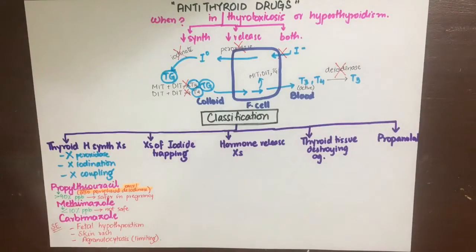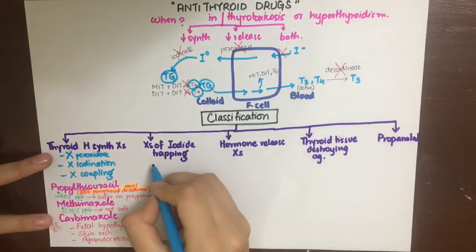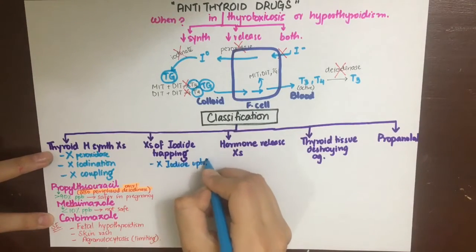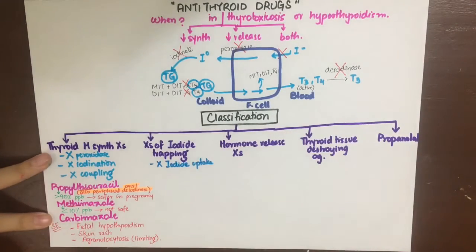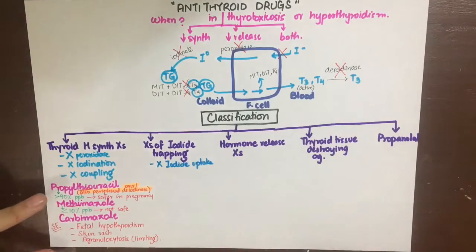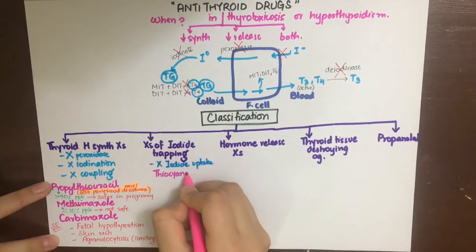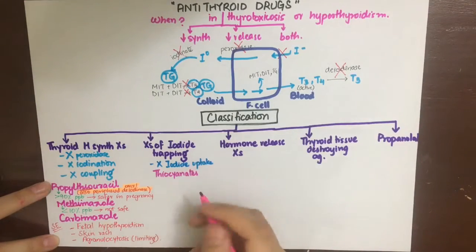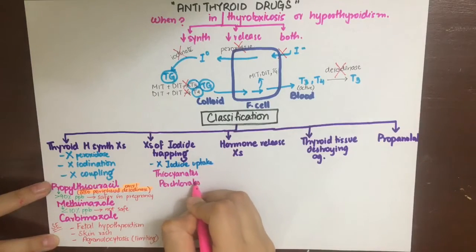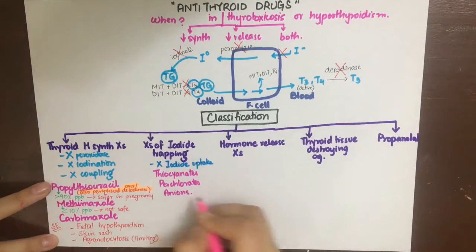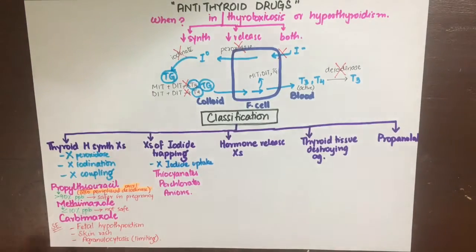The next drugs used are inhibitors of iodide trapping — they inhibit the uptake of iodide. These include thiocyanates, perchlorates, and other anions. They are highly toxic and their effect is unpredictable, so their use has declined and they are no longer used.